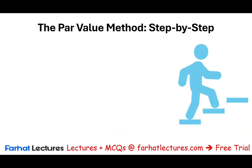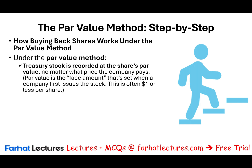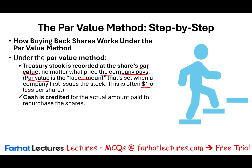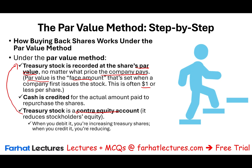Let me show you the steps for the par value method before we dive into an example. Under the par value method, treasury stock is recorded at the share's par value — no matter what price the company pays. The par value is the face amount set when the company originally issued the stock, often a dollar or less. We debit treasury stock at par, then credit cash for the actual amount paid to repurchase the shares. Treasury stock is a contra equity account — it reduces stockholders' equity. Debiting treasury stock increases it; crediting treasury stock reduces it. The difference will be either a gain or a loss affecting paid-in capital.